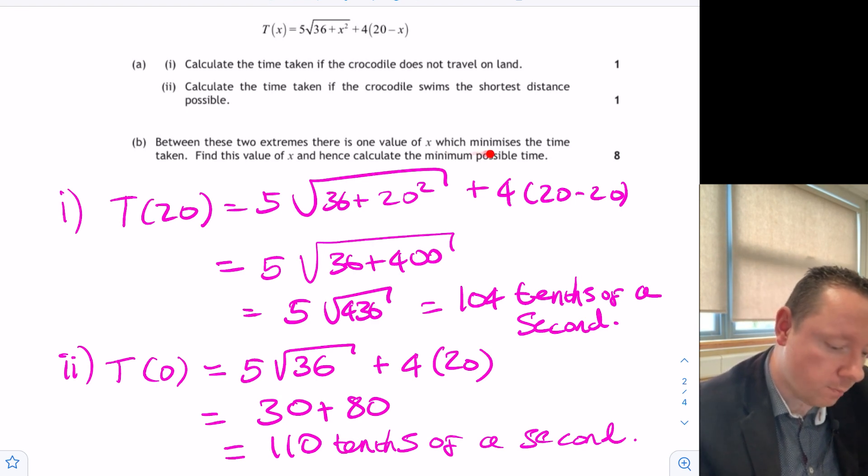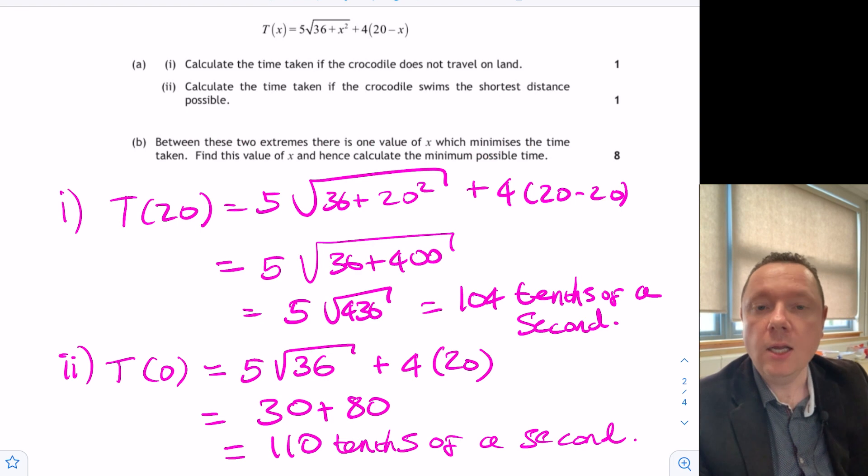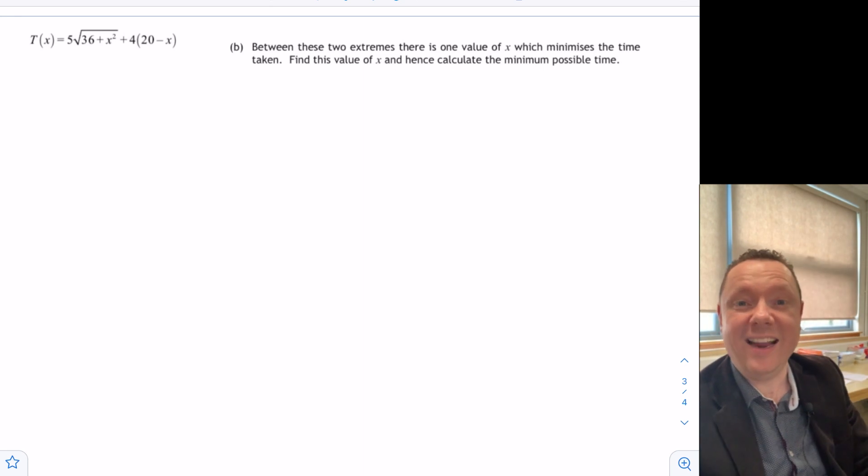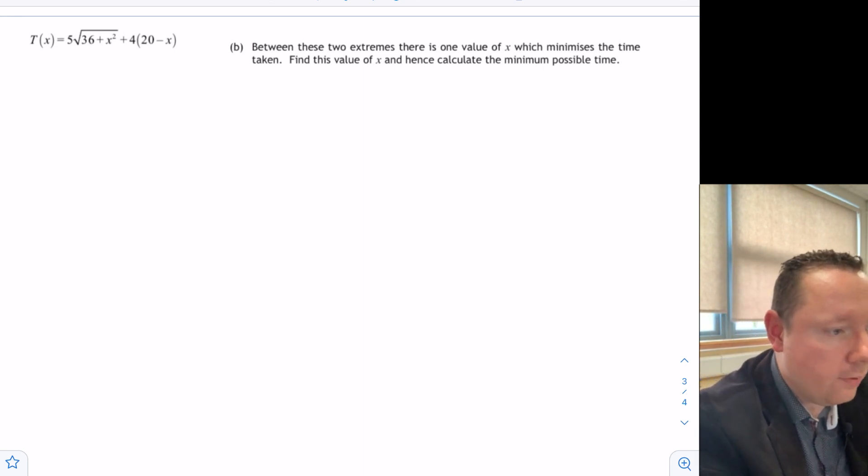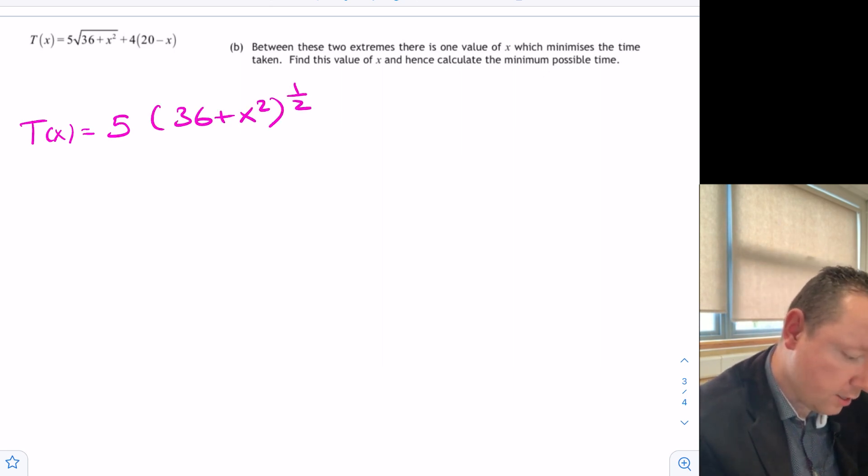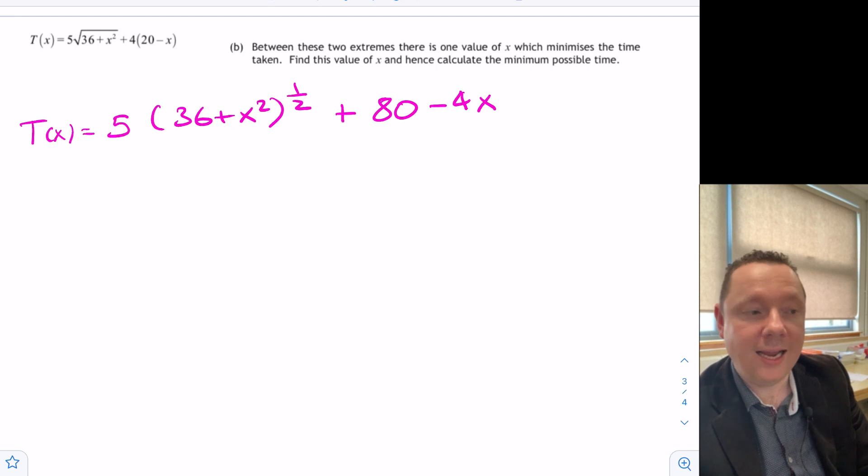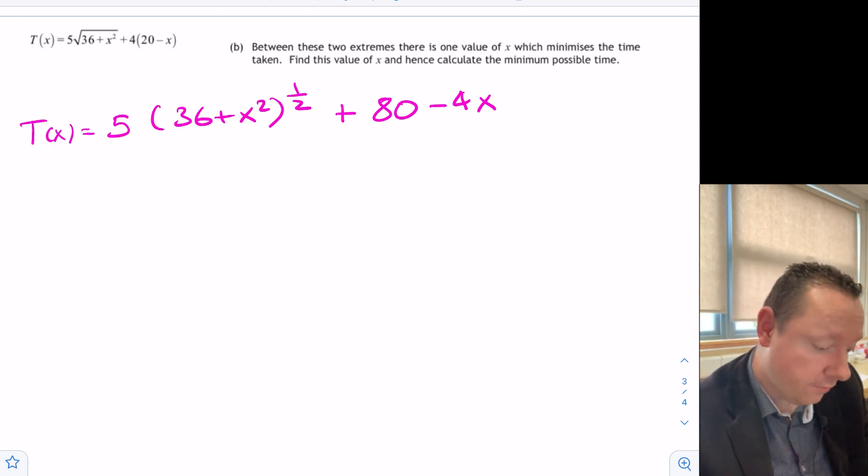Part B, the context of the question was quite unusual to say the least. Between these two extremes there's one value which minimizes the time taken. If you're a higher maths pupil you should realize that minimized means we're doing optimization and that should be a big key red flag for you. Find this value of x and hence the minimum possible time. So step one I need to get it ready to differentiate. So if we look at our t of x we can do the thirds can come a power so that's 36 plus x squared to the power of a half plus 80 minus 4x just by multiplying out the bracket.